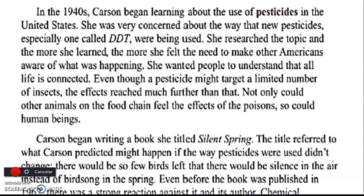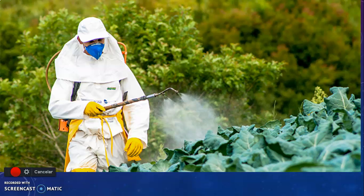DDT was the name of the pesticide she investigated, and she concluded it was harmful to natural resources. Carson began writing a book titled 'Silent Spring.' The title referred to what Carson predicted might happen if the way pesticides were used didn't change: there would be so few birds left that there would be silence in the air. Pesticides can cause damage to birds and other animals in the ecosystem.